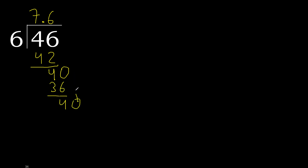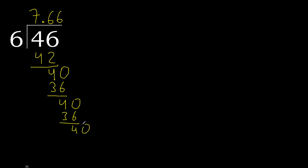Complete. 0 point — the point is here. 40: 6 multiplied by 6 is 36, subtract. Complete. The remainder repeats here, therefore repeat.